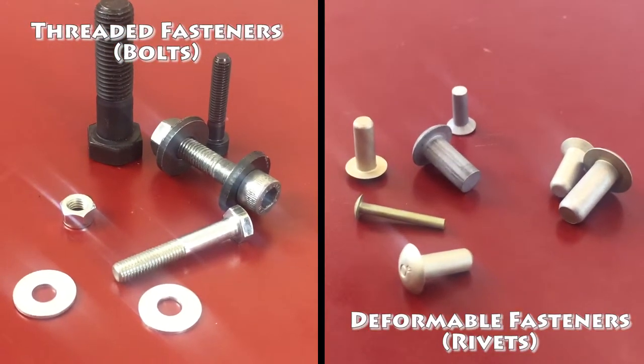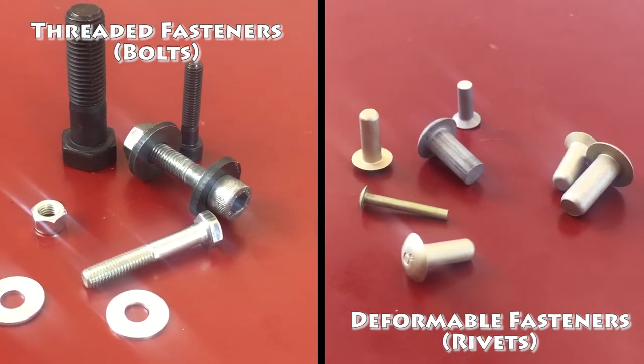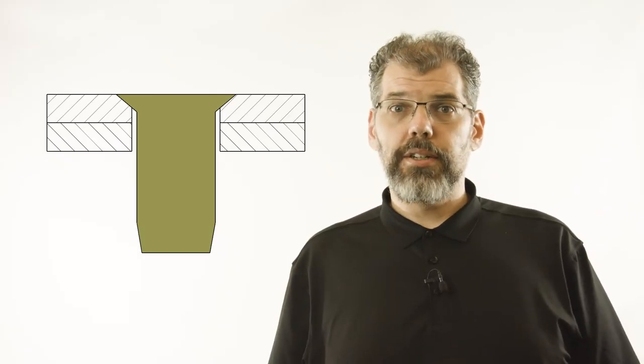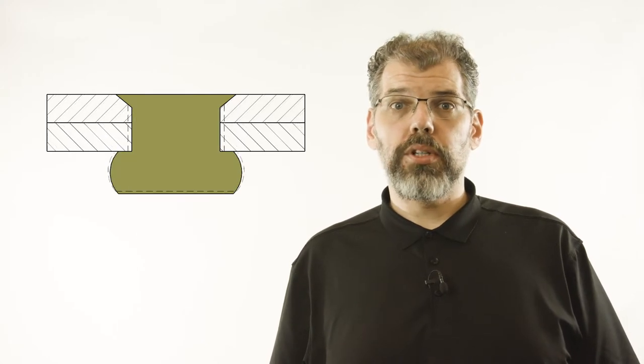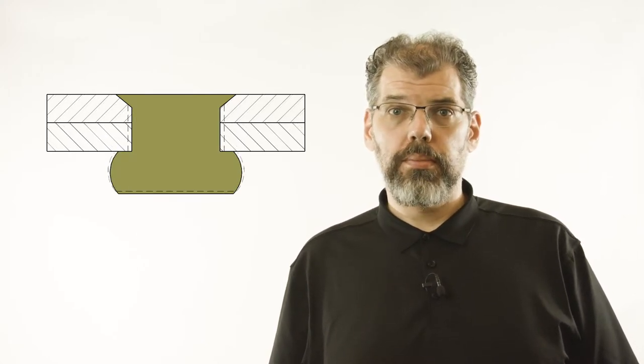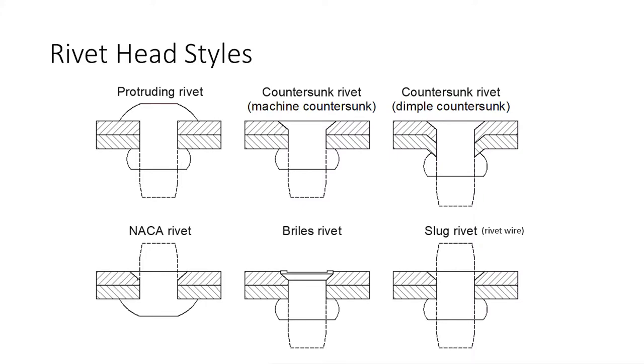Aerospace rivets look similar to a standard bolt, but without the threads. Rather than using a thread and a nut, the end of the fastener is plastically deformed in order to create a permanent connection between the joint parts. Rivets can come with a variety of head styles and can even come in the form of rivet wire, where both heads of the fastener are formed during installation.